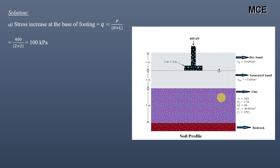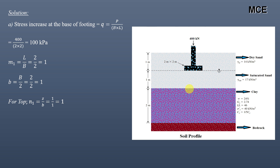To find the average stress increase in the layer, we first find coefficients used to calculate the influence factor. The first coefficient m1 is length divided by breadth: 2/2 = 1. Then b is half of the width: 2/2 = 1. For n1, which is z divided by b, where z is the distance from the bottom of the footing to the point of interest — for the top of the clay layer, z equals 1 meter, so n1 = 1.